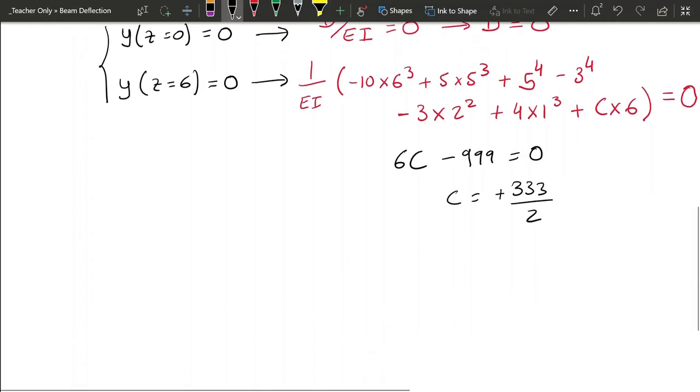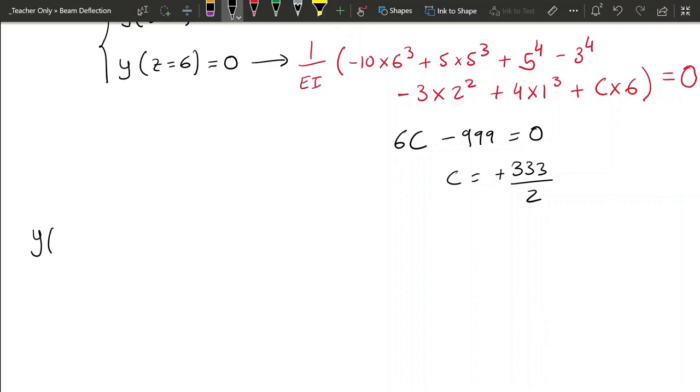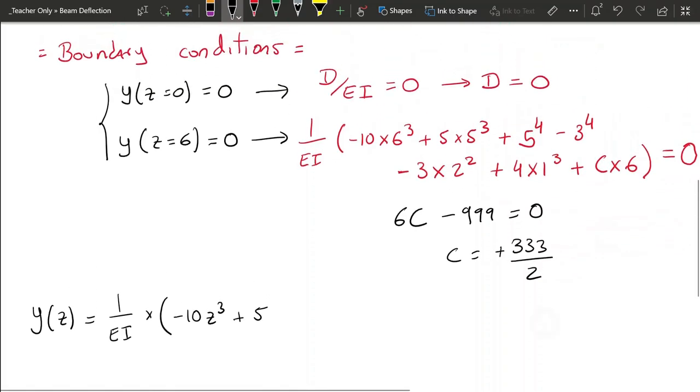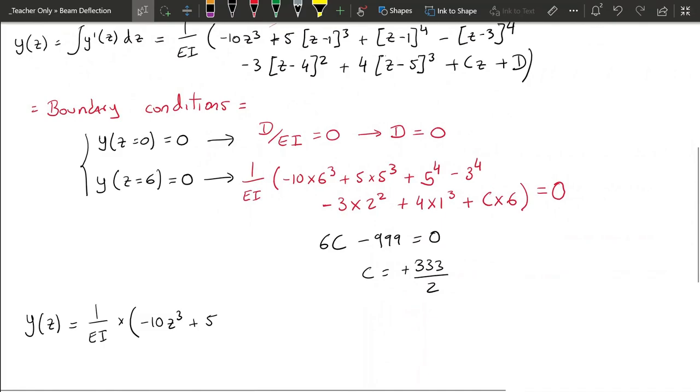So this means we can finalize this problem and conclude that our deflection with respect to z is 1 over EI times, and now minus 10, z cubed, plus 5. Let me scroll up so I can copy it.